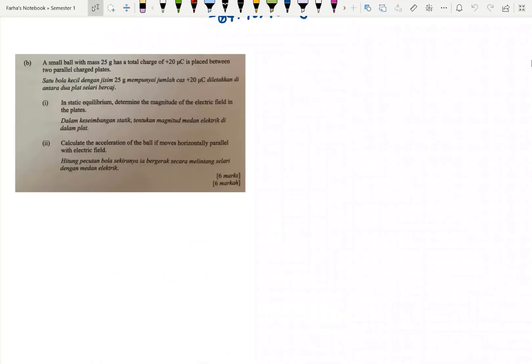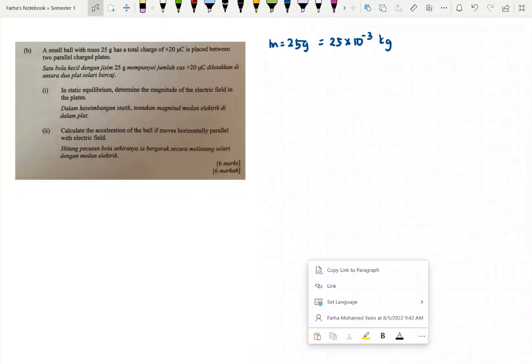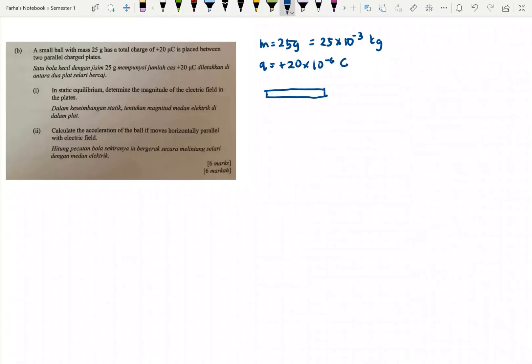Now let's look at question 1B. A small ball with mass 25 grams has total charge positive 20 microcoulombs. In static equilibrium, determine the magnitude of the electric field in the plates. Mass is 25 grams, convert to 25×10^-3 kg. Q is positive 20×10^-6 coulombs. We draw the plates: positive plate here, negative plate here, a small ball with mass 25 grams. This is the object. This is FE, this is the weight.